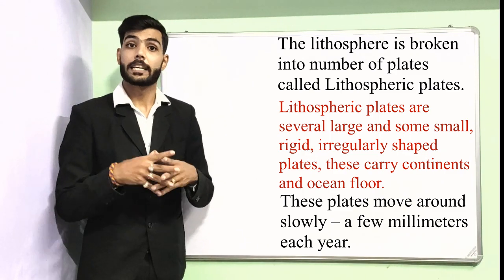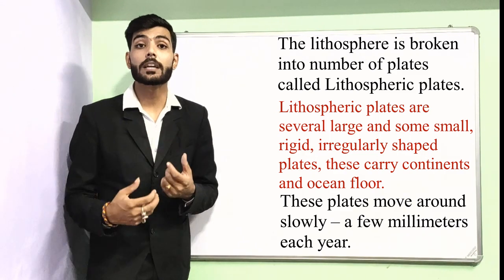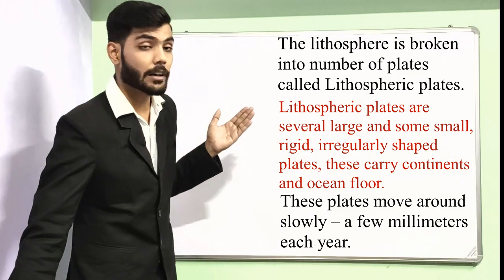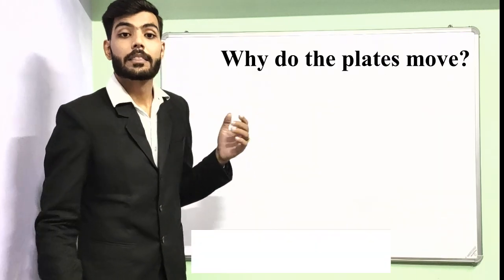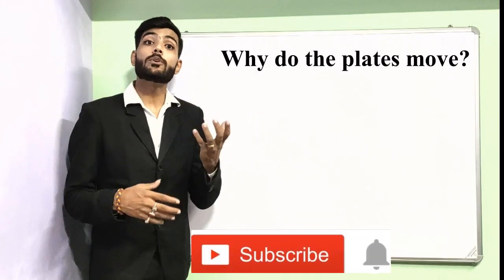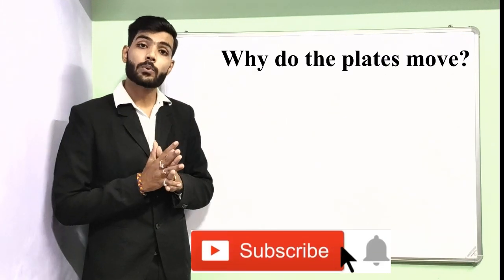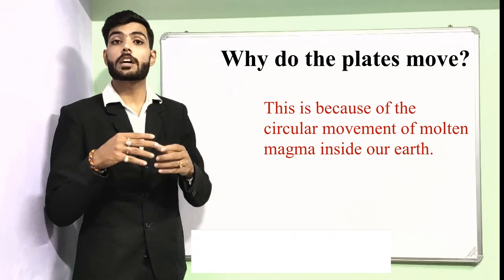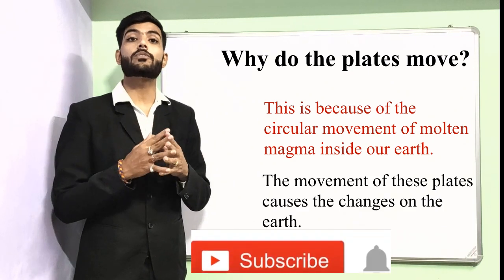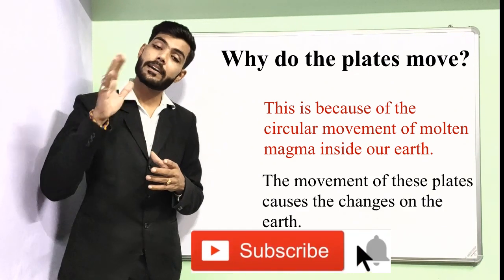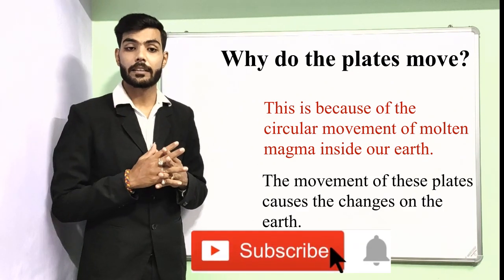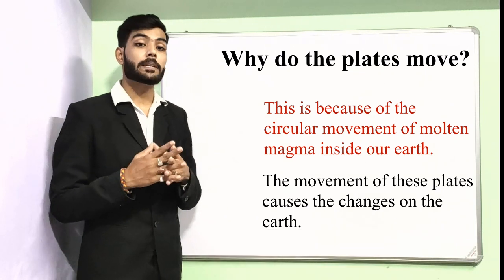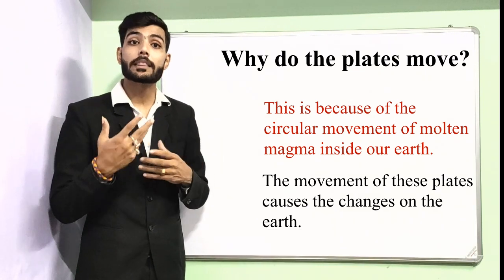These plates keep moving almost a few millimetres each year. Why do these plates move? These plates actually move due to the circular movement of molten material inside the earth, and the movement of these plates causes the changes on the surface of the earth.